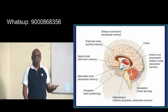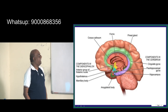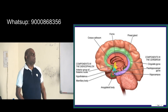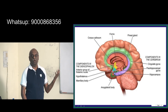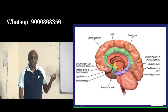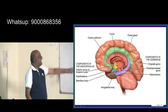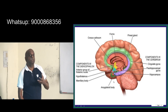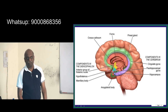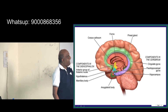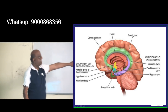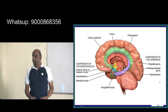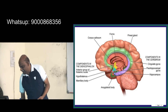Memory is divided into declarative memory, procedural memory, and others. Some components of the limbic system come from the diencephalon — that is, the thalamus. The anterior group of thalamic nuclei, the hypothalamus, and the mammillary body are the components contributed by the diencephalon. The cingulate gyrus, parahippocampal gyrus, and hippocampus are contributed by the cerebrum.